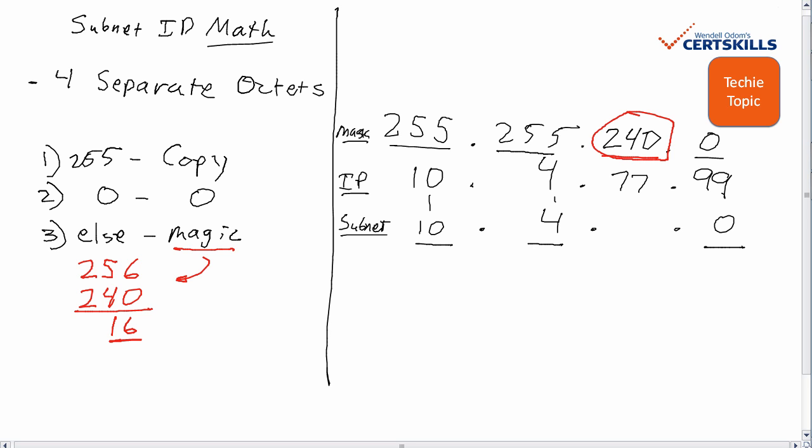Keeping that magic number in mind, compare it to the IP address in that octet, in this case 77, and find the multiple of the magic number that's closest to 77 without going over, starting at the multiple 0. What are the multiples of 16 starting at 0? There's 0, 16, 32, 48, 64, 80. Of these, 64 and 80 are closest to 77, but we want the closest multiple that's not bigger than 77, and 64 is it. So our subnet ID is 10.4.64.0.